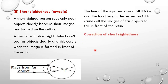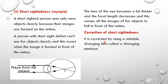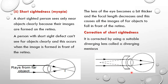Now let us see how we can correct this defect. We can correct short-sightedness by using what you call a diverging meniscus — a special type of lens. A diverging meniscus, when used, will enable the image to be formed at the retina. So the image will be formed at the retina, and this person will be in a position to see objects from far distances. That's how we correct short-sightedness by using a suitable diverging lens called a diverging meniscus.